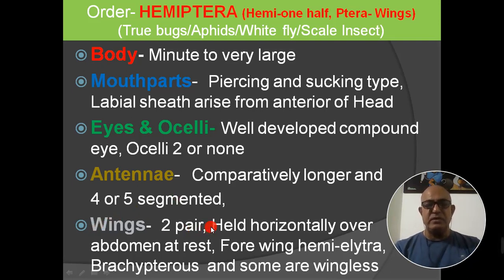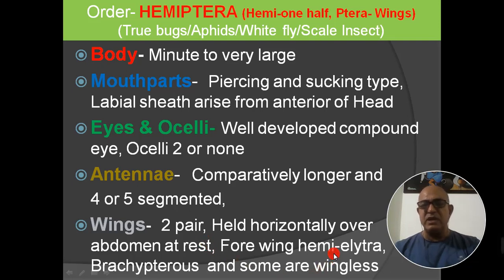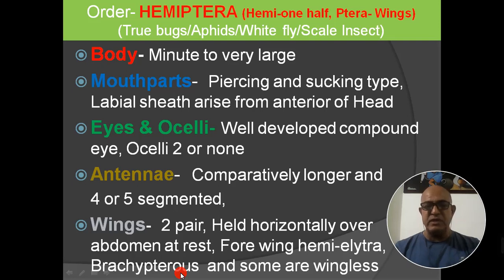Wings are two pairs, held horizontally over the abdomen at rest. The forewings are hemi-elytra — 'hemi' means half — so half the wing is opaque and half is transparent. Some insects are brachypterous, meaning they have reduced wings, and some are wingless.